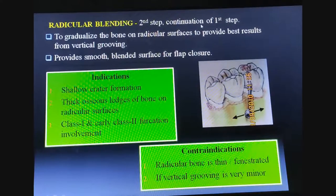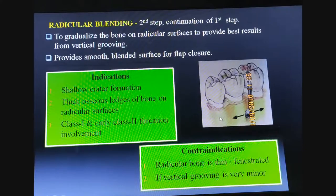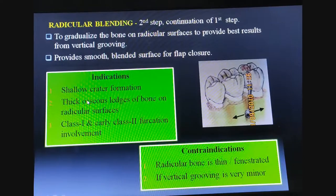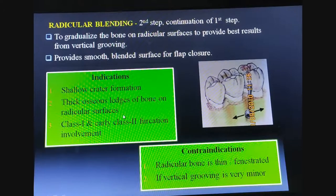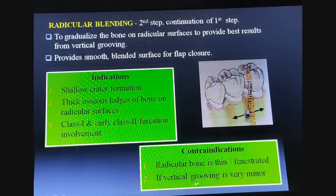Radicular blending is the second step and a continuation of the first, used to gradualize the bone on the radicular surface to provide the best results from vertical grooving. It is indicated for shallow crater formation, thick osseous ledges of bone on radicular surfaces, or Class 1 and early Class 2 furcation involvement. It is contraindicated when radicular bone is thin, if there is a fenestration, or if vertical grooving was very minor.